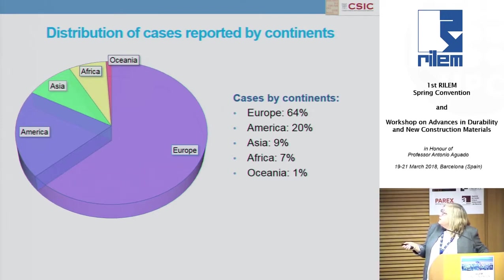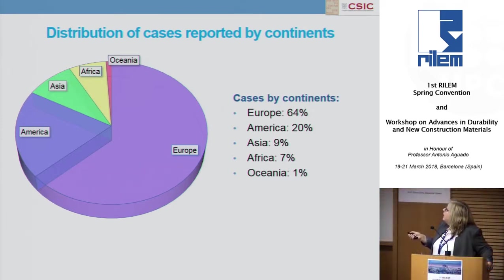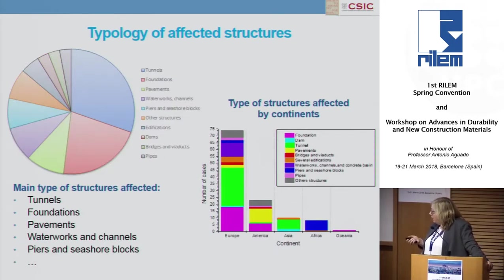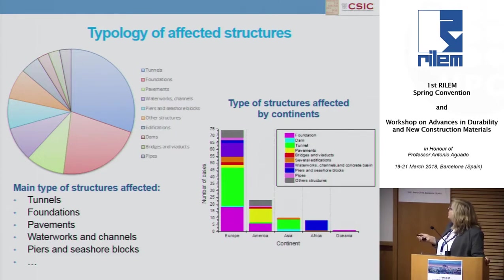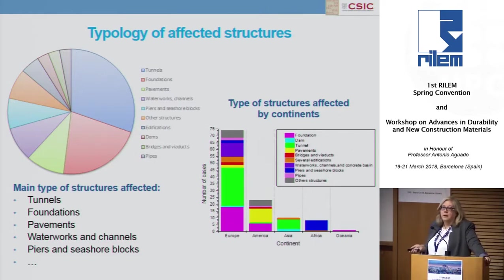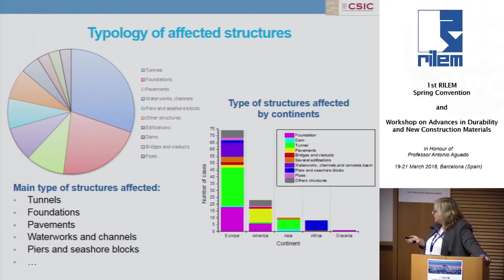Many of the cases are reported in Europe, fewer in America, and Asia and Africa more or less the same, and only one case in Oceania. With respect to the type of structure affected by external sulfate attack: we have tunnels, mainly in Asia, America and Europe; foundations, mainly in America and Europe; and pavements mainly reported in North America — United States and Canada. We also have other different types of structures affected by external sulfate attack.